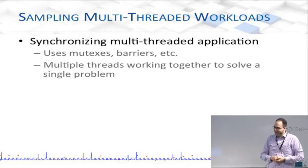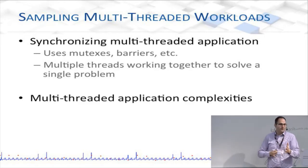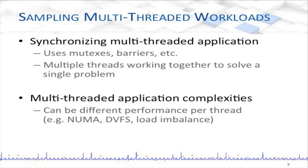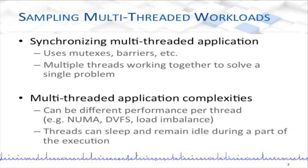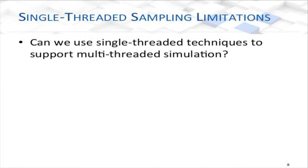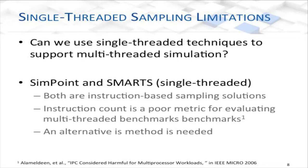There are some complexities here. Multi-threaded applications can lead to different performance per thread, even for homogeneous applications — a very interesting observation. Threads can also sleep when they're waiting for other threads. These complexities were not something the original sampling methodologies were able to take into account for multi-core. Can we simply apply these single-threaded techniques? They basically use instruction count, and instruction count is a poor metric for performance in the multi-core world. Now we care about runtime. The original sampling methodologies did not need to worry about runtime and assumed instruction count was sufficient. Unfortunately, in the multi-core world, it's not.